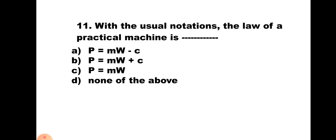Question number 11: With the usual notation, the law of a practical machine is — A) P = MW − C, B) P = MW + C, C) P = MW, D) none of the above. The law of machine is P = MW + C, where P is the effort, W is the load, M is the slope of the graph, and C is the initial friction. The correct answer is B) P = MW + C.